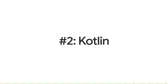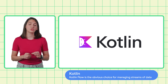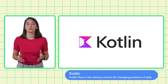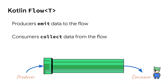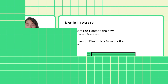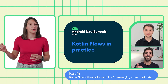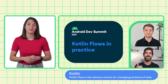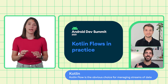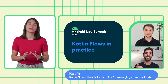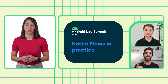Number two is Kotlin. Coroutines are the recommended solution for asynchronous work, and Kotlin Flow is the obvious choice for managing streams of data. But how do you use flows in practice? Check out this Android Dev Summit session to get the most out of them, including learning how to use the newly stable repeat-on-lifecycle API.